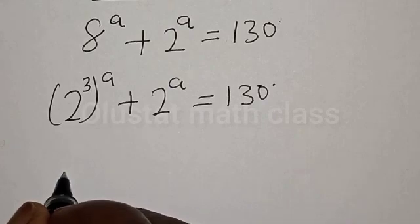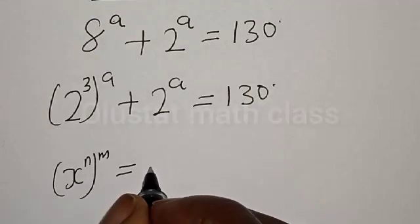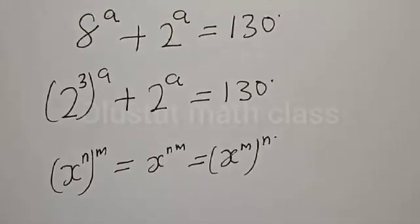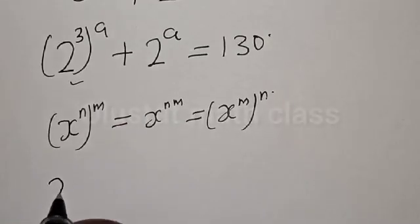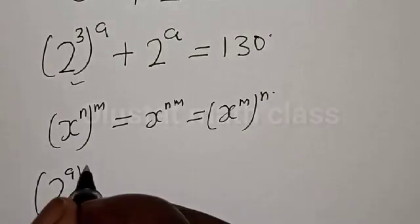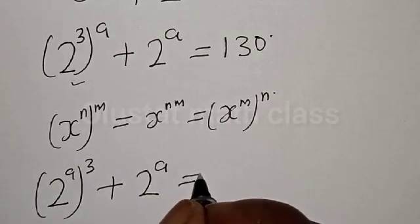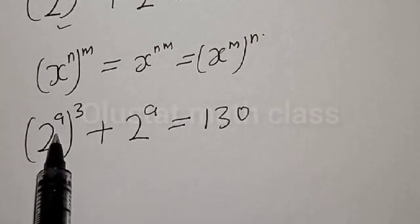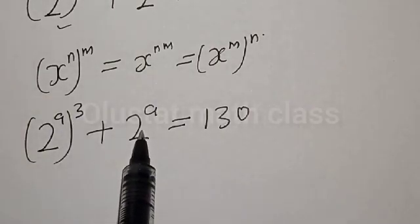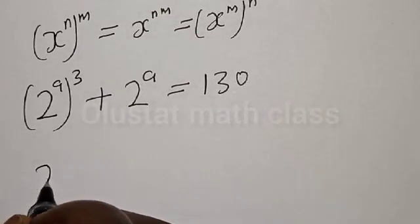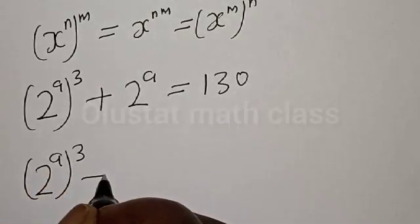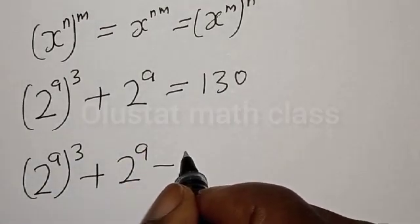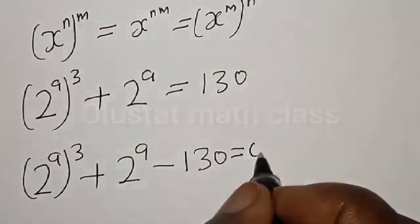Remember, if you have s raised to power n raised to power m, it is the same thing as s raised to power nm, which equals s raised to power m raised to power n. Then this becomes 2 raised to power a, raised to power 3, plus 2 raised to power a, is equal to 130. So we have 2 raised to power a cubed, plus 2 raised to power a, is equal to 130.